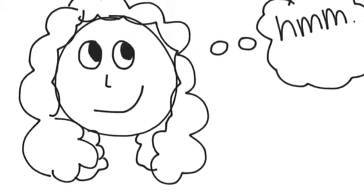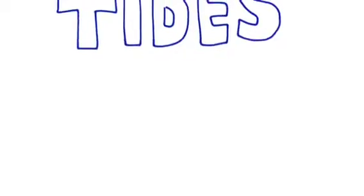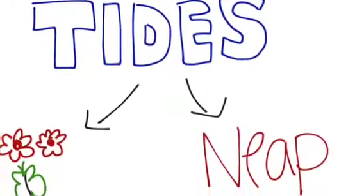This happens twice a day while Earth is rotating. Isaac Newton was the first person to explain this scientifically. There are two main types of tides: spring tides and neap tides.